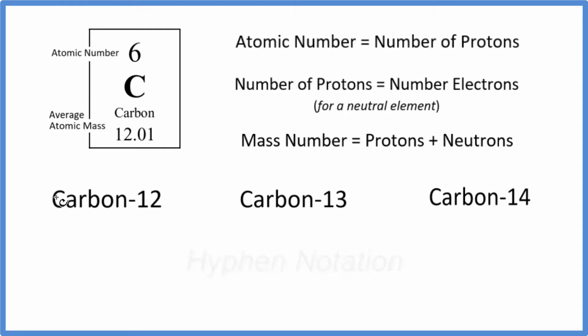To start out with, we have what we call hyphen notation right here. In hyphen notation, we write the name of the element, carbon. Sometimes we just write the element symbol as well. And then this 12 here, we put a hyphen 12.